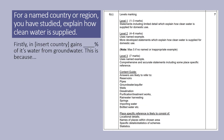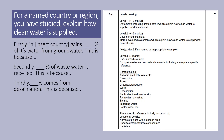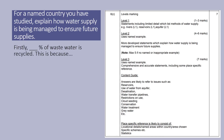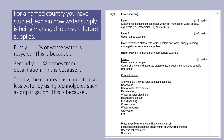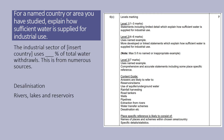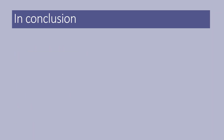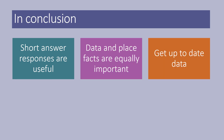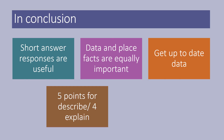For the question on describing methods: state the country, gains X% of water from groundwater, mainly used by farms through drilling boreholes. Go through the most and least used methods and give a reason why. For explaining clean water supply, go through the main uses and explain why they use those methods. For managing future supplies: waste water is recycled — this is because; desalination — this is because; use of drip irrigation — this is because. In conclusion: short answer responses are very useful. Data and place facts are both equally important. Get up-to-date data. Five points to describe, four to explain, and practice.